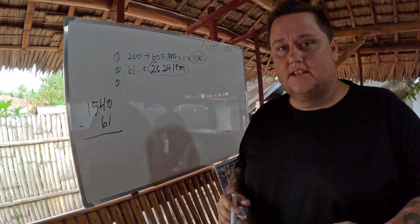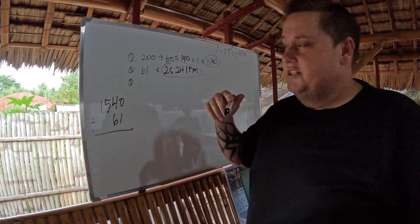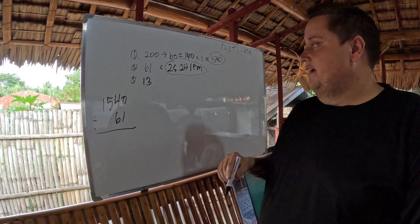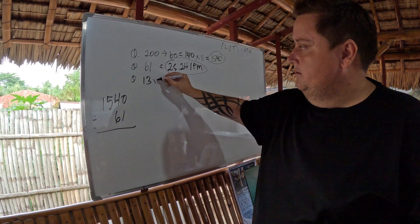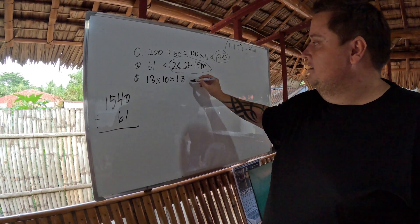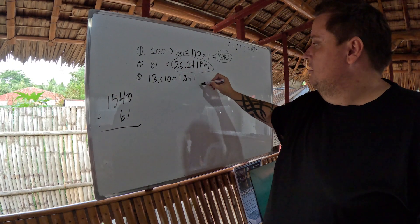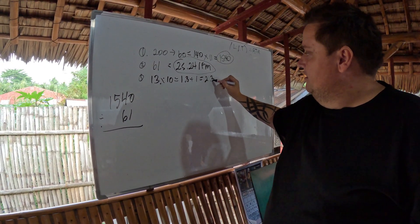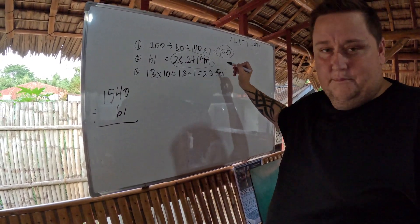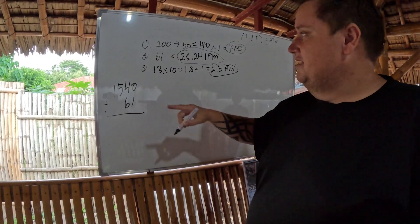So the third thing you need to know is your depth and pressure. So my average depth happened to be 13 meters. And to find the pressure we go divided by 10 equals 1.3 plus 1 for the surface pressure, is 2.3 atmospheres. That's the third thing we need to know.